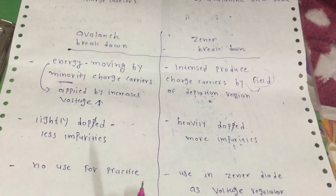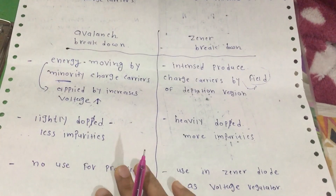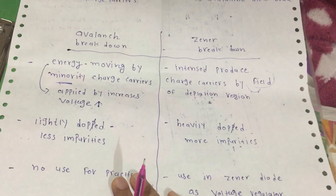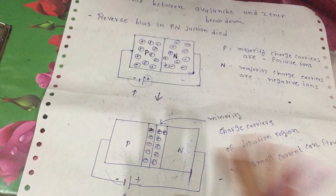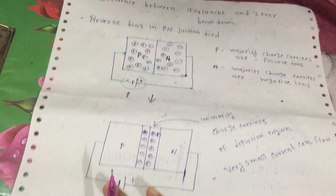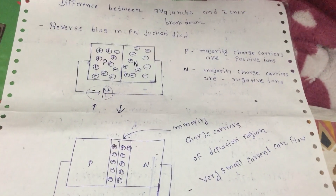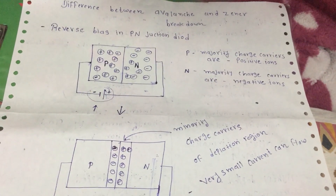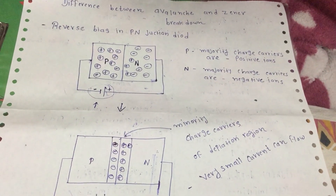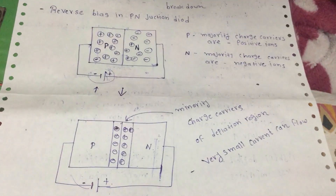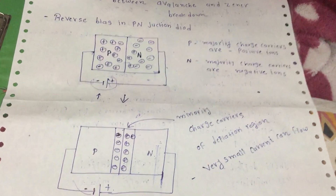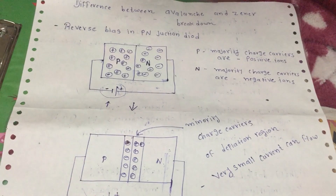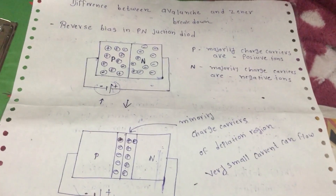This is the difference between avalanche and zener breakdown, based on the reverse bias of the PN junction diode. I hope you understand this concept. Thank you for watching.